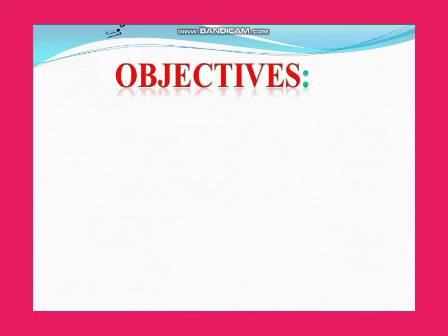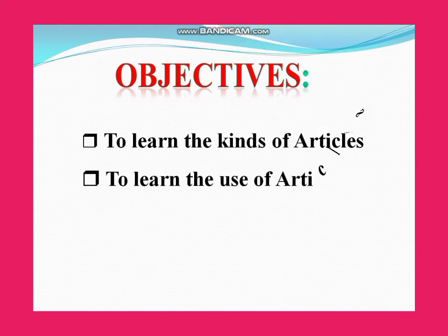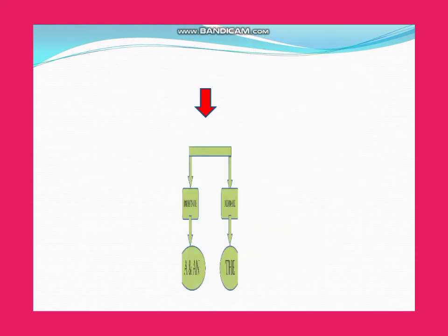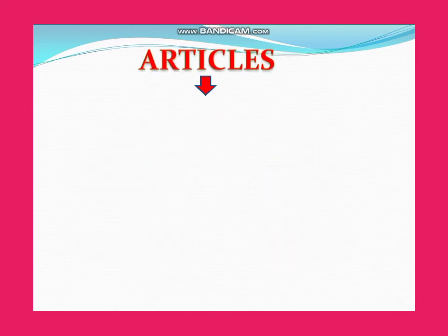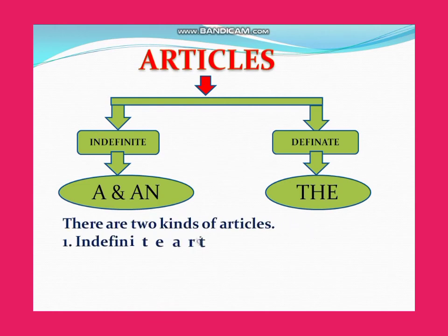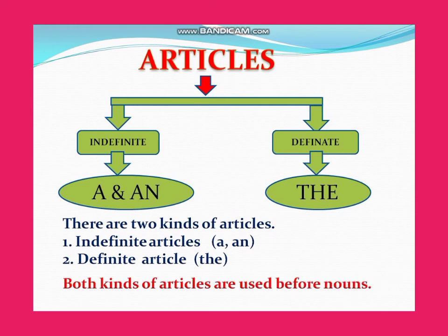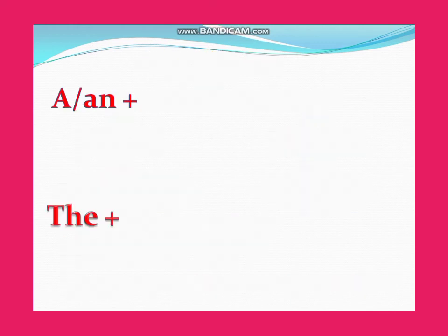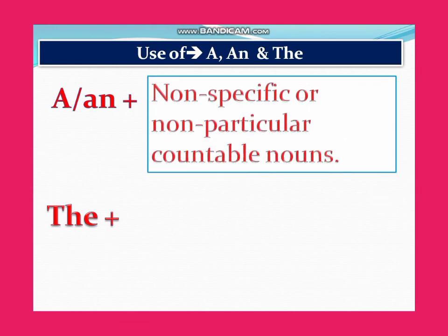Dear learners, the objectives of this lesson are to learn the kinds of articles and to learn the use of articles. We know there are two kinds of articles: indefinite articles and definite articles. Indefinite articles are 'a' and 'an', and definite article is 'the'. Both kinds of articles are used before nouns.